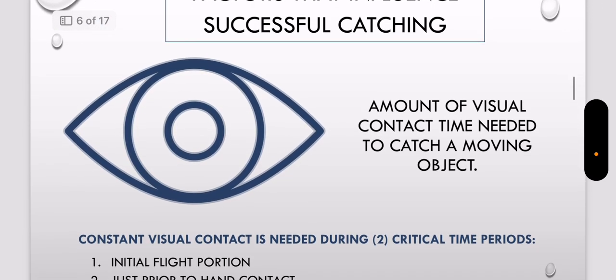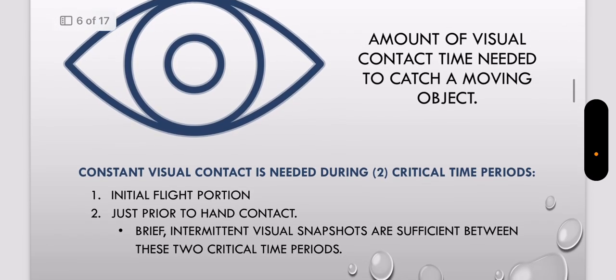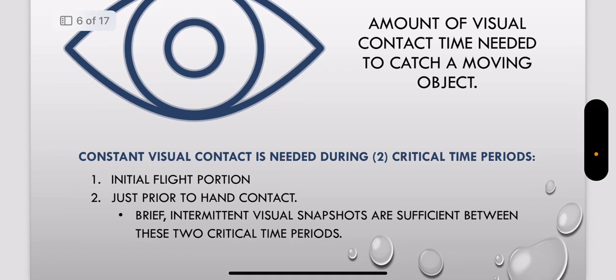And then the amount of visual contact needed to catch an object. There are two critical times you need constant visual contact: the first being the initial flight portion of the ball, and then right before you make contact with the ball with your hands. Those are the two times you need to constantly be looking at the ball, or else you're not catching it. It'll be tough.